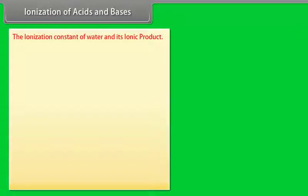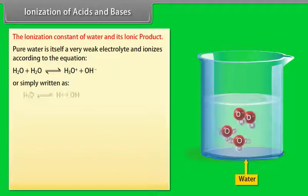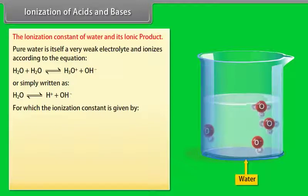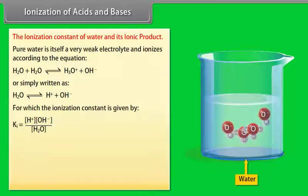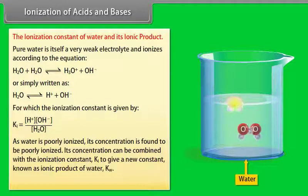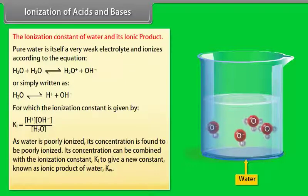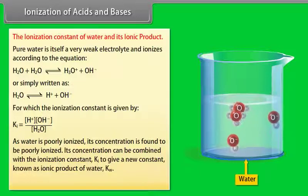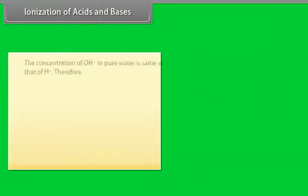Ionization of acids and bases — the ionization constant of water and its ionic product: Pure water itself is a very weak electrolyte and ionizes according to the equation. The ionization constant Ki is equal to [H⁺][OH⁻] / [H₂O]. As water is poorly ionized, its concentration can be combined with Ki to give a new constant known as the ionic product of water, Kw.